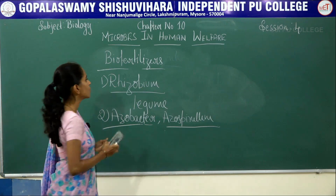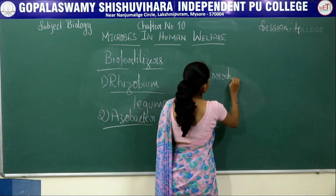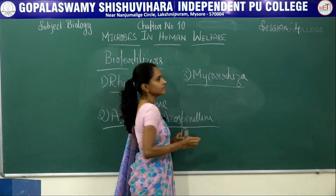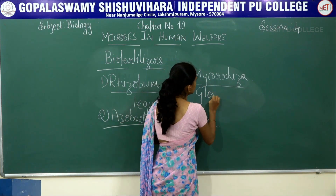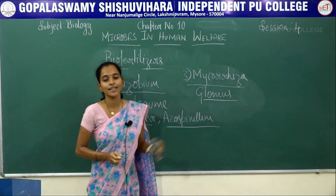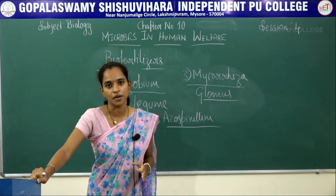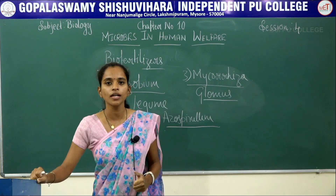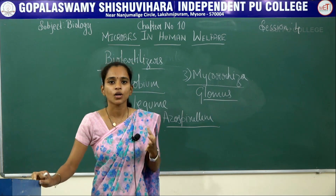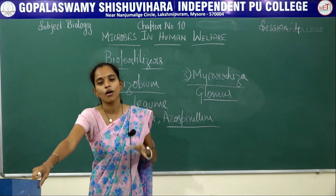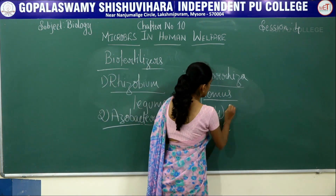The next bio fertilizer is Mycorrhiza. Certain types of mycorrhiza belonging to the genus Glomus are used as bio fertilizers. This is a fungi which helps in absorption of phosphates from the soil, increases soil fertility, and helps in phosphate absorption especially in higher plants and crop plants, thereby directly providing nutrition to the soil.